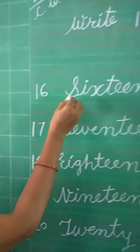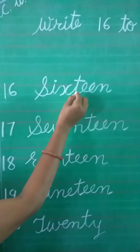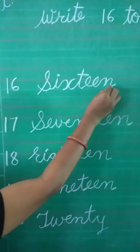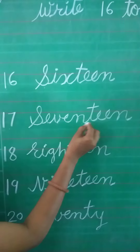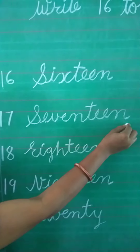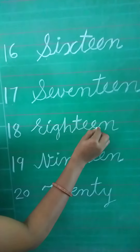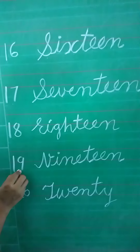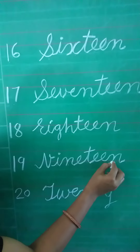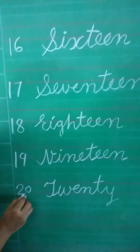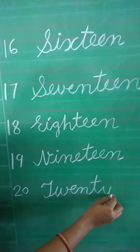One time read karengi. 16 number spelling: S-I-X-T-E-E-N, 16. 17: S-E-V-E-N-T-E-E-N, 17. 18: E-I-G-H-T-E-E-N, 18. 19: N-I-N-E-T-E-E-N, 19. 20: T-W-E-N-T-Y, 20.